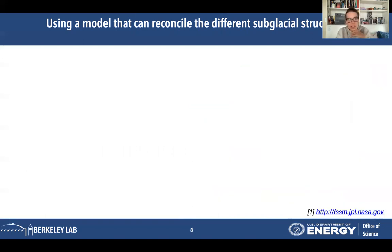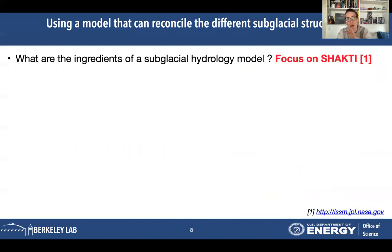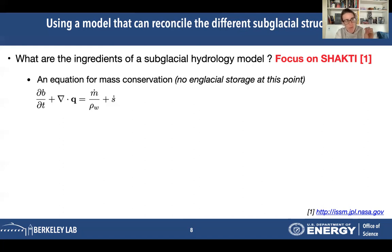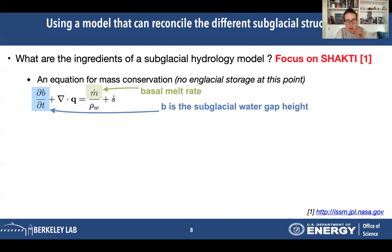Let's look at what those ingredients are in our specific model. We are focusing on a set of equations very similar to those used in Shakti, a model already existing in the literature — I've provided a link if you're interested. First, there's an equation for mass conservation. We are solving for a subglacial water gap height, which evolves according to a classical equation. What makes it change is the melt rate at the base and additional source terms — for example, water percolating through the ice during summer.